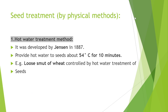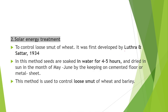Next is seed treatment, which comes under physical methods. Seeds can be given hot water treatment. This method was developed by Janssen in 1887 — providing hot water to seeds at about 54°C for 10 minutes. For example, loose smut of wheat can be controlled by hot water treatment of seeds. Second is solar energy treatment to control loose smut of wheat, first developed by Luthra and Sattar in 1934.